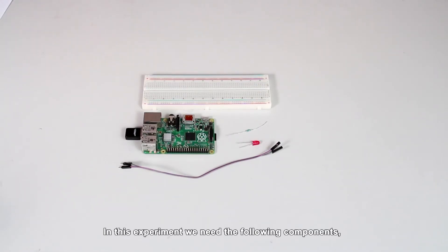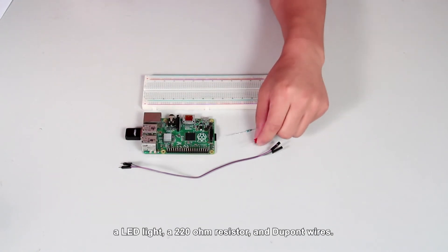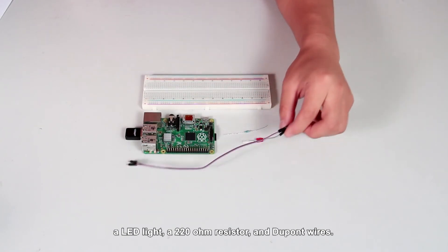In this experiment, we need the following components: an LED light, a 220 ohm resistor, and dupont wires.